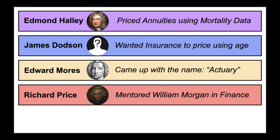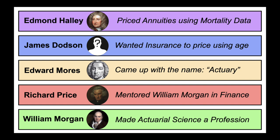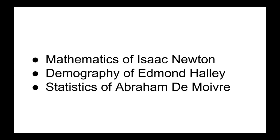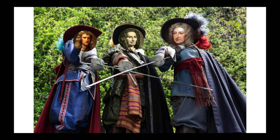Let's look a little at Dodson, because besides the finance of Richard Price, he needed three things: the mathematics of Newton, the demography of Halley, and the statistics of today's star — Abraham de Moivre. Funnily enough, all three of them were best friends, and we can think of them as the three musketeers of actuarial science.